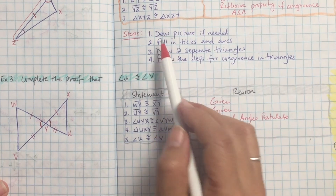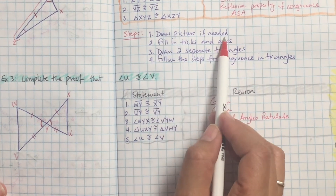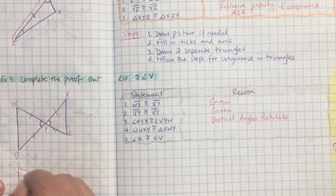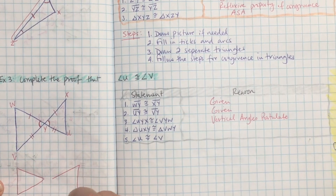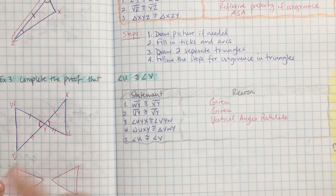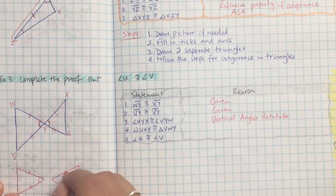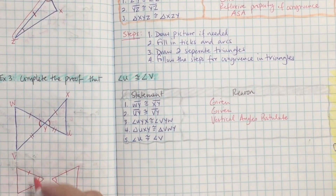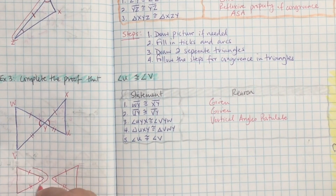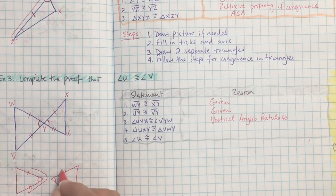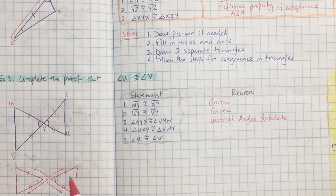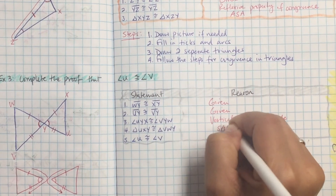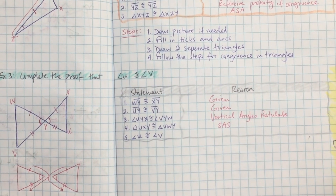Now draw two separate triangles and fill in the information: one tick, an arc, two ticks — same in the other triangle. One tick, one arc, two ticks. So the two triangles are congruent because of side-angle-side, SAS.